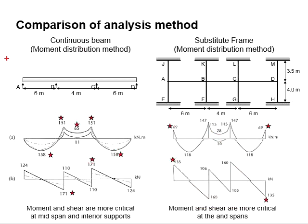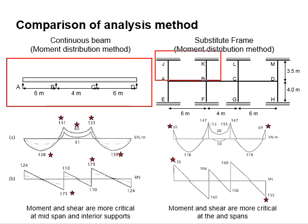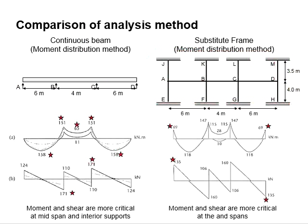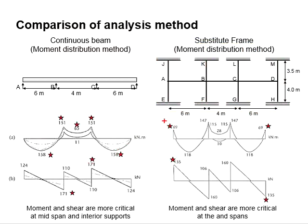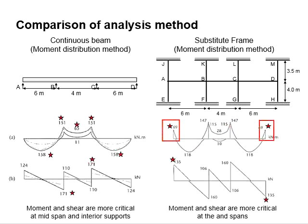There is another significant difference between the two methods. The continuous beam method assumes the beam end does not carry any moment. As for the subframe method, there will be moment acting at the end of the beam, which gives a more critical end moment and end shear force at the end of the members.